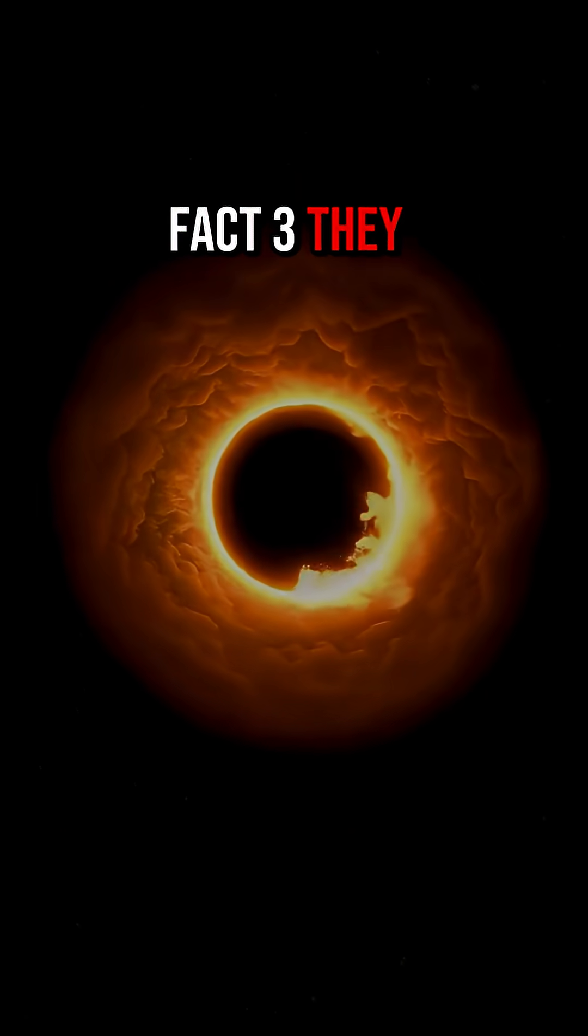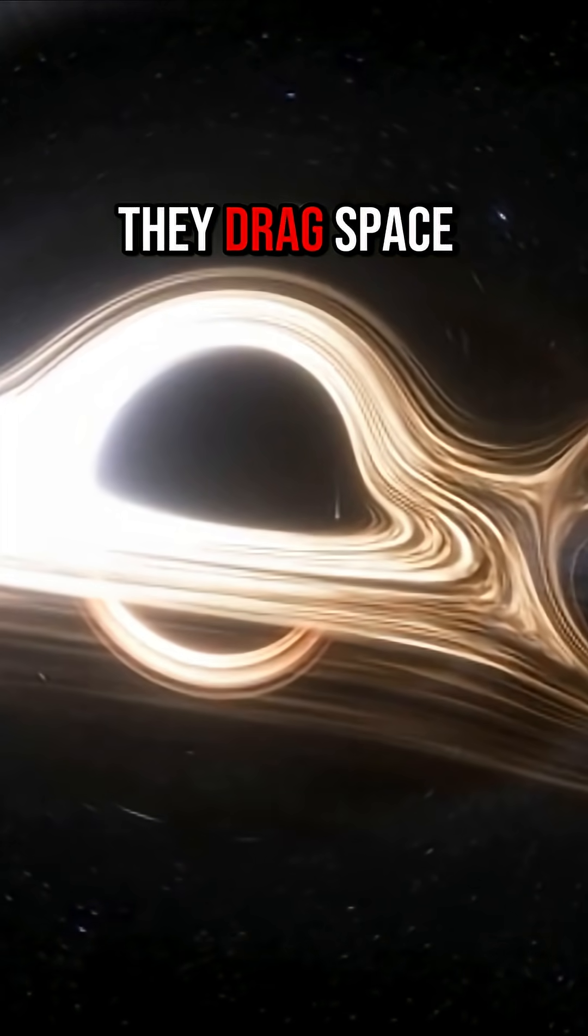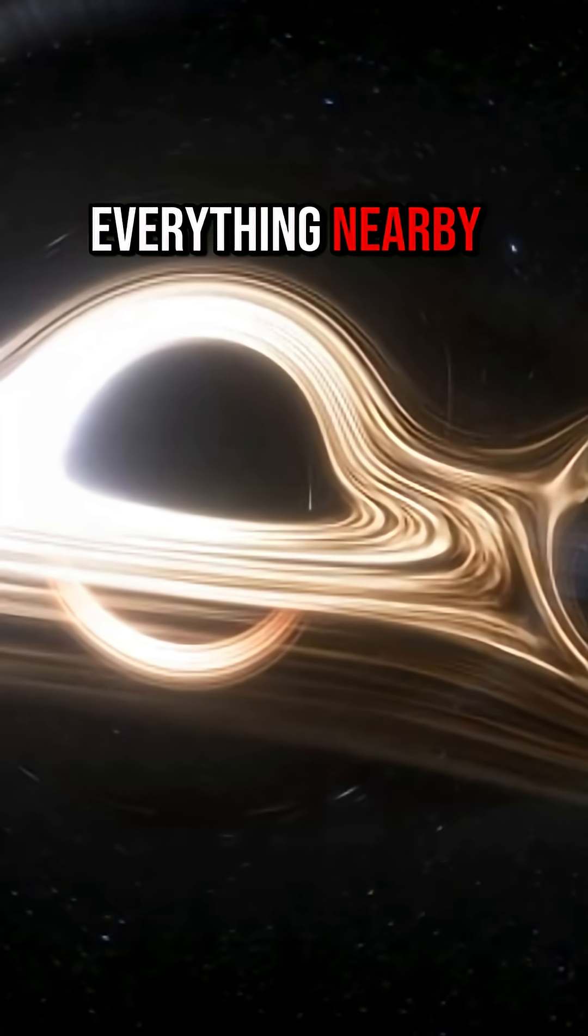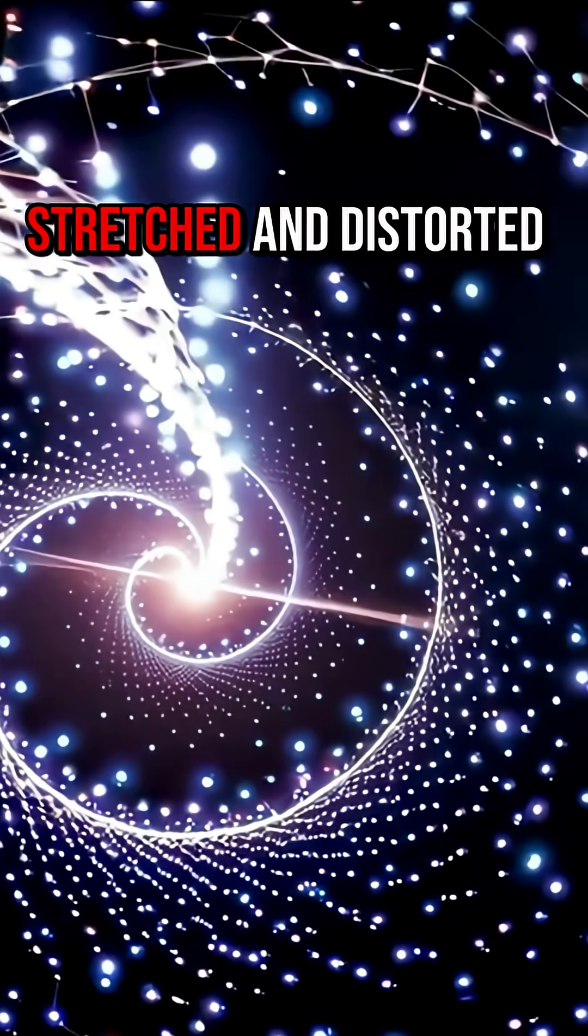Fact 3. They warp space and spin fast. Some black holes spin so fast they drag space around them, twisting and warping everything nearby. If you traveled close, the stars themselves would appear stretched and distorted.